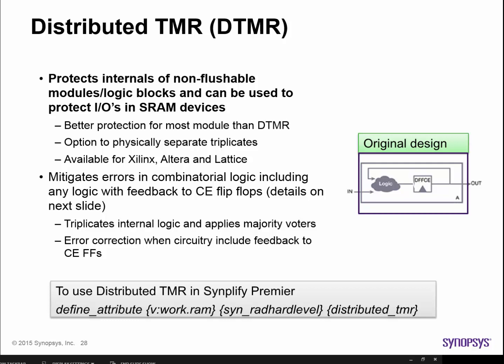A third type of TMR is known as distributed TMR or DTMR. Like BTMR, DTMR is useful for protecting modules. However, it differs from BTMR in that it offers additional protection because you can alter the internals of the module to mitigate errors in combinatorial logic that have feedback to clock-enabled flip-flops. You can also opt to physically separate the triplicates for additional protection. Simplify Premier allows you to apply DTMR to a module by placing an attribute on that module's definition. The original design will be transformed into DTMR circuitry as shown in the next slide.